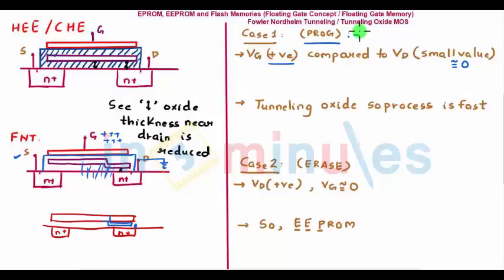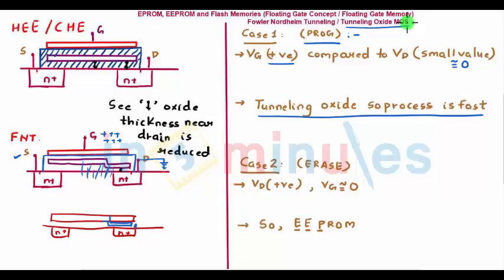In summary for programming: gate voltage is put to a very high value and drain voltage is set to zero, so electrons tunnel toward the floating gate. This process is fast because the tunneling oxide is so thin that electrons move quickly toward the floating gate.